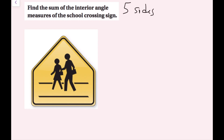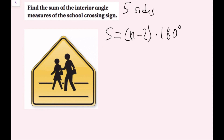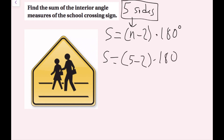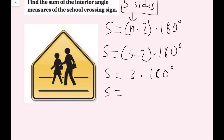Using the formula to find the number of degrees the interior angles add up to, we write s equals (n minus 2) times 180 degrees. I just need to plug the number of sides in — n is the number of sides. So I plug in 5 and get s equals (5 minus 2) times 180 degrees, which is 3 times 180, and 3 times 180 is 540 degrees.